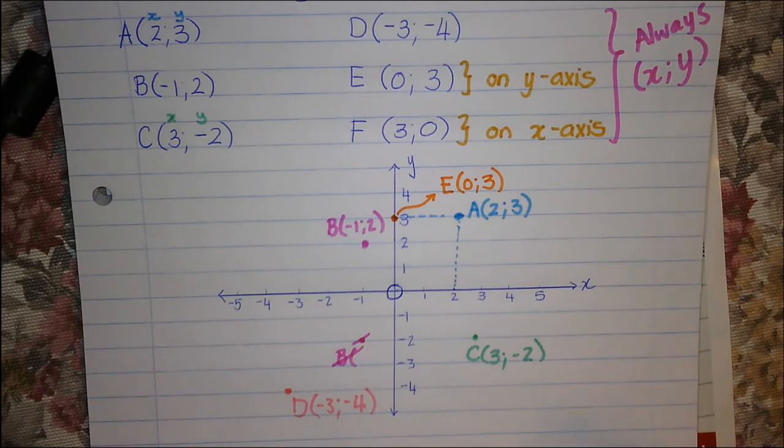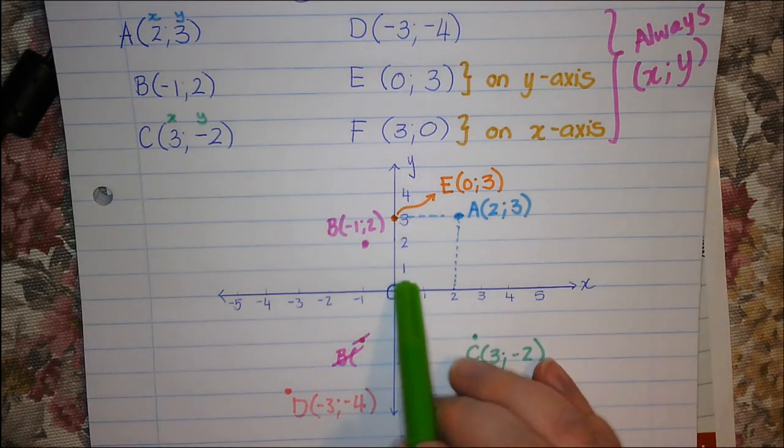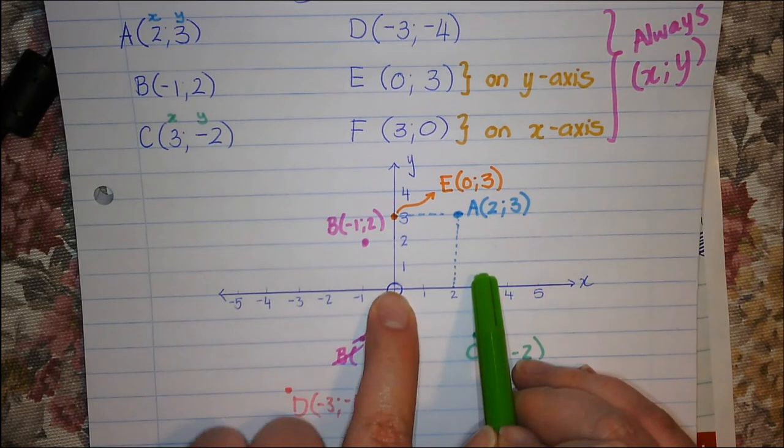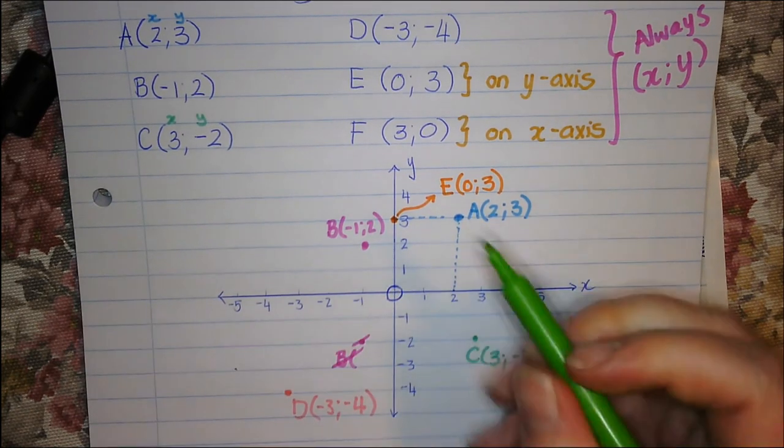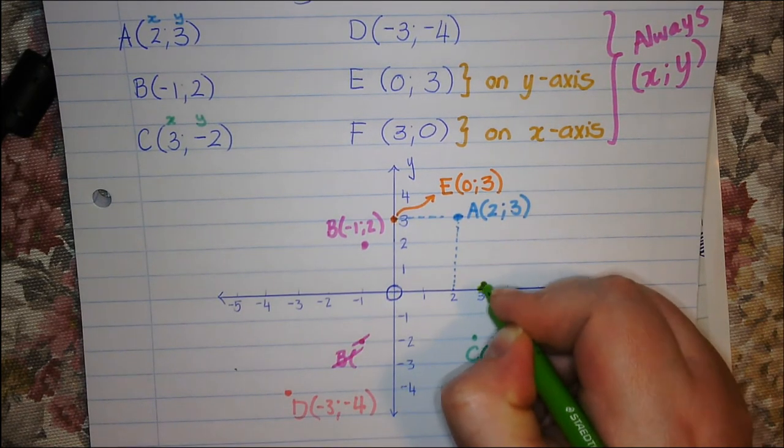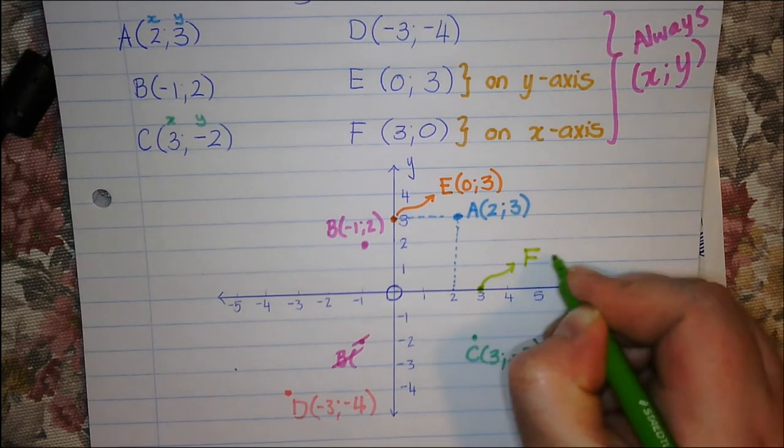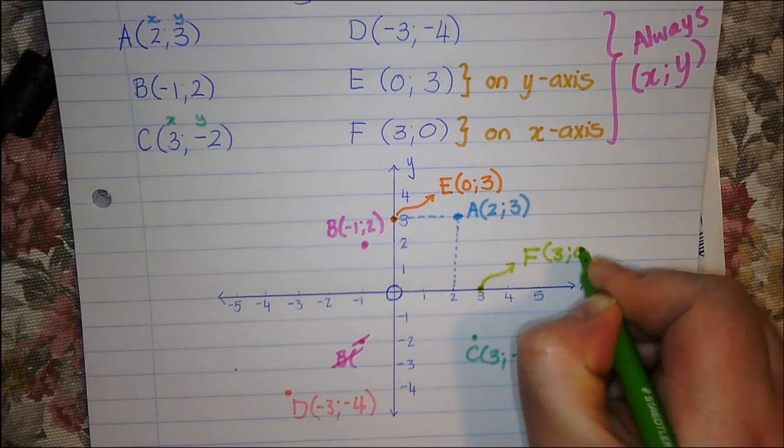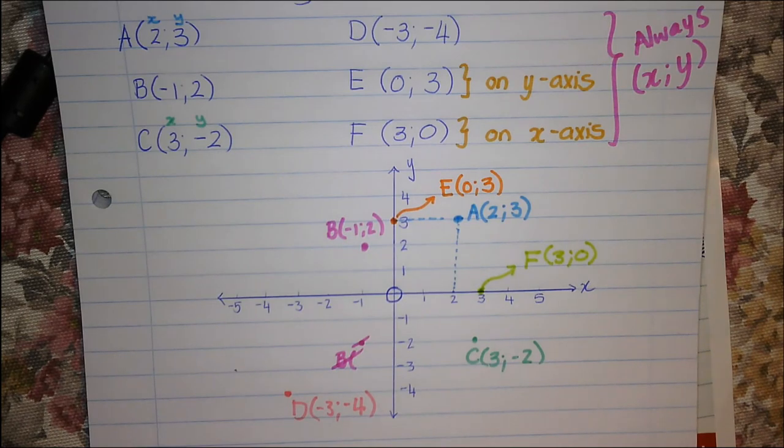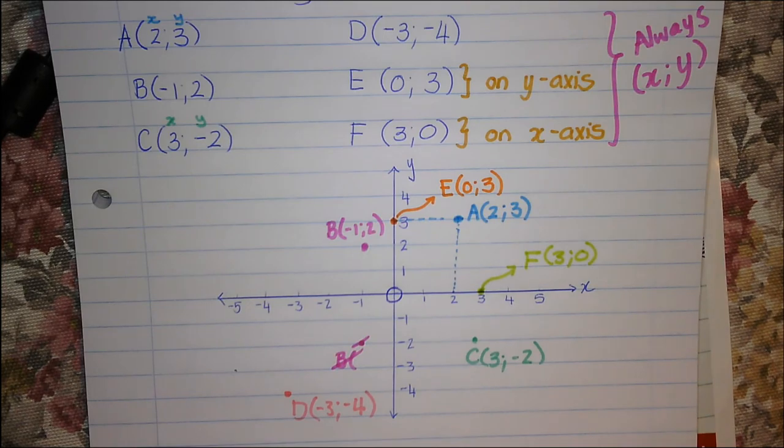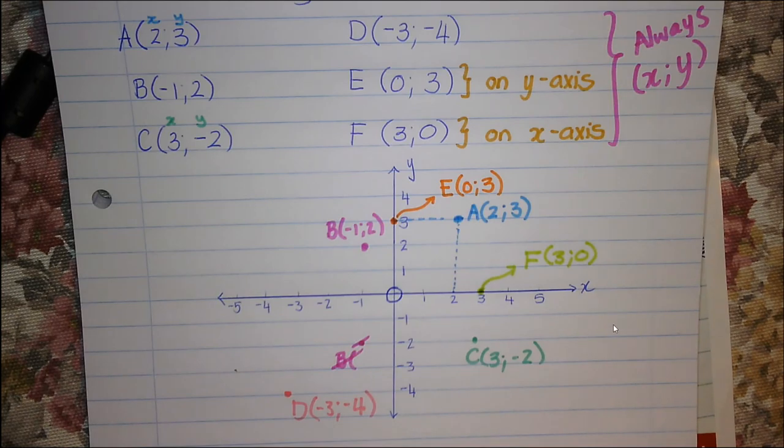And then let's have a look at this one. x is 3 and y is 0. So it's here. This is the point F, which is 3 and 0. For any coordinate on the x-axis, the y value is 0. And again, that is quite important to understand. I hope that is helpful. We will talk about sketching straight lines in the next video.